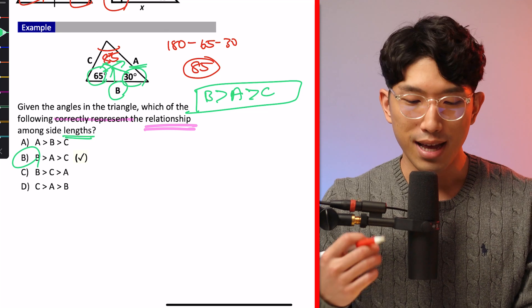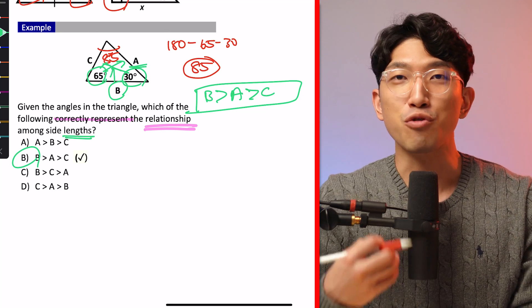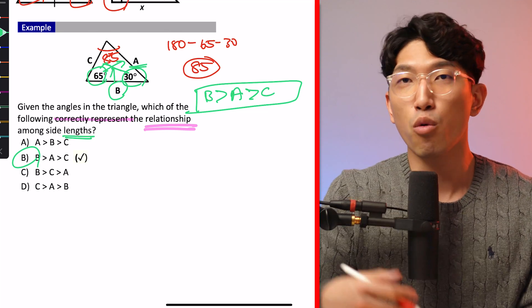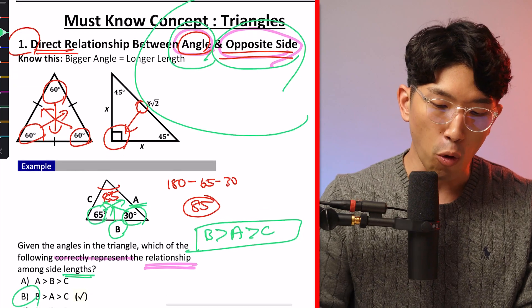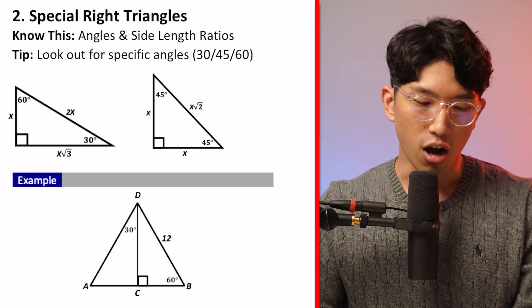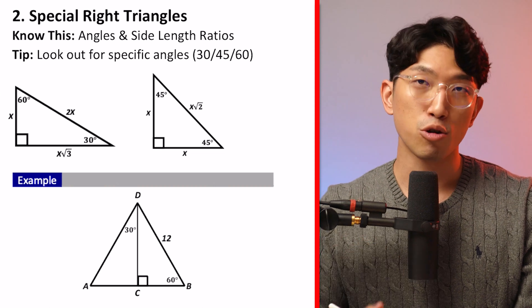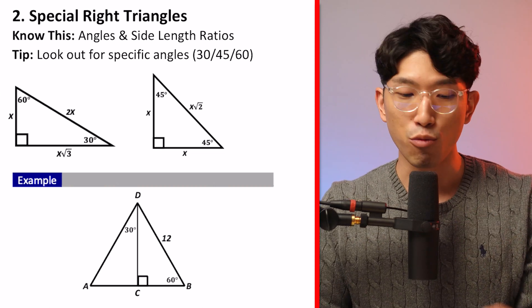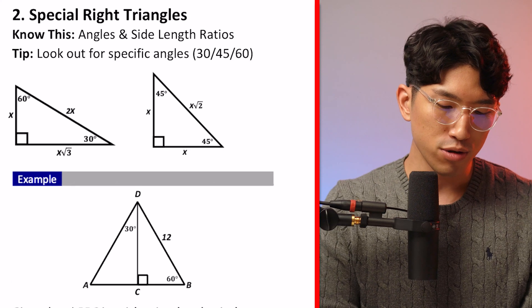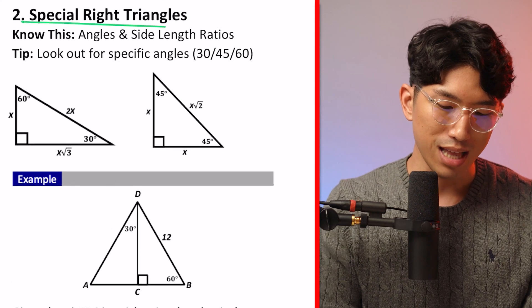What you have to understand is that the SAT has a lot of questions where you either know it or you don't, and the deciding factor is whether you know the concept. That's why it's so important to understand the 25 concepts tested on the SAT. That was the first concept — now let's go over the second, which nicely ties into the first: special triangles.